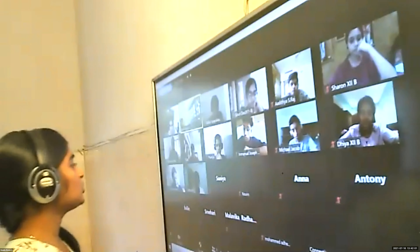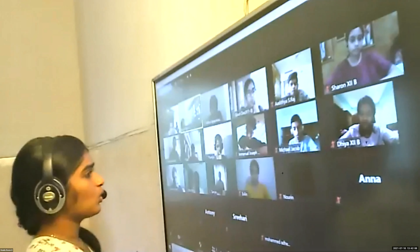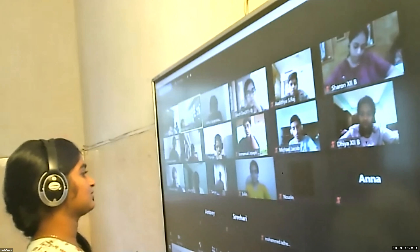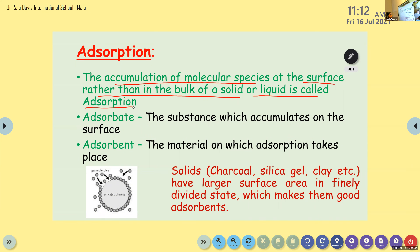Then we are moving to a new term. Are you familiar with the term adsorption? A-D-S-O-R-P-T-I-O-N. Write down the heading: Adsorption. This is similar to absorption, but its only difference is that the substance is accumulated or concentrated only at the surface. The accumulation of molecular species at the surface rather than in the bulk of a solid or liquid is called adsorption.